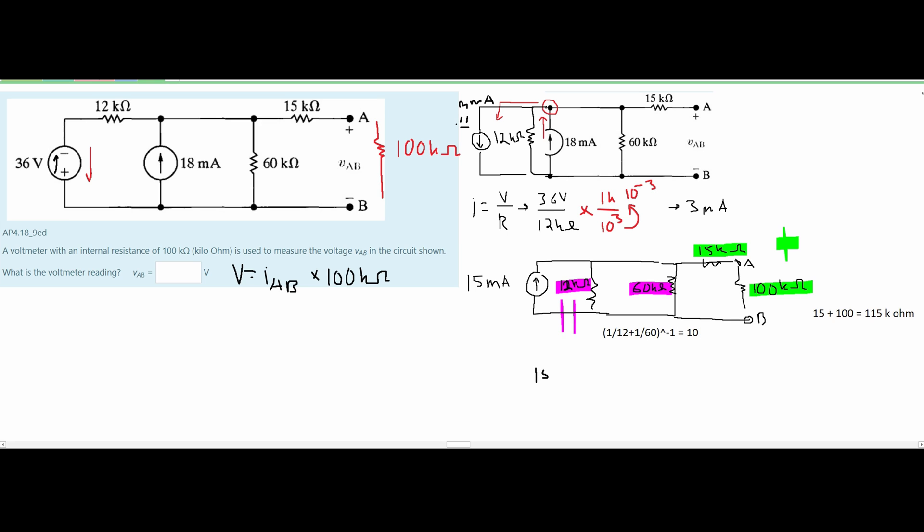So when we redraw this we're going to have our 15 milliamp current going up like this. We're going to have our resistance which is now 10 kiloohms since we combined both of our 12 and 60 kiloohm resistors together.